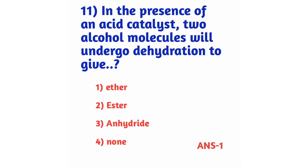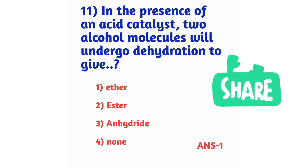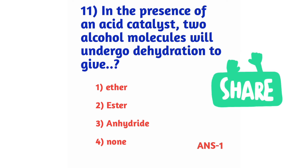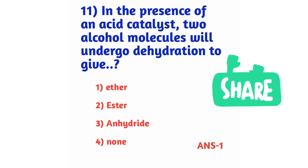Question number 11: In the presence of an acid catalyst, two alcohol molecules will undergo dehydration to give — ether, ester, anhydrate, or none. When two molecules undergo dehydration, it gives ether. The right answer is option 1, ether.